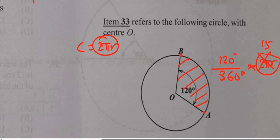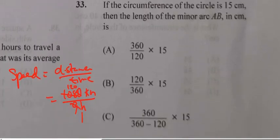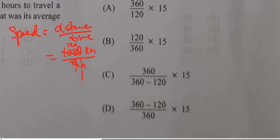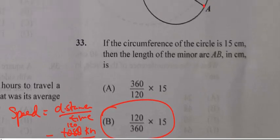So we're looking for 120 over 360 times 15. Let's see if they simplified that - no they didn't. 120 over 360 times 15, that's B.